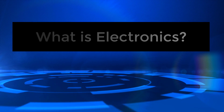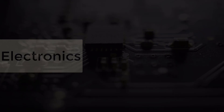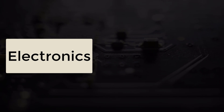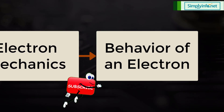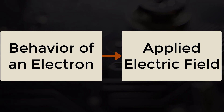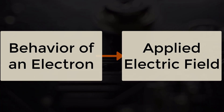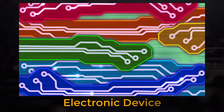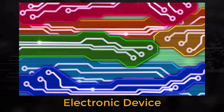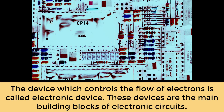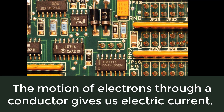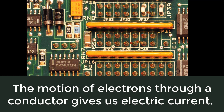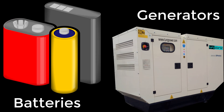What is electronics? The word electronics is derived from electron mechanics, which means to study the behavior of an electron under different conditions of applied electric field. The device which controls the flow of electrons is called an electronic device. These devices are the main building blocks of electronic circuits. The motion of electrons through a conductor gives electric current, which can be produced with the help of batteries and generators.